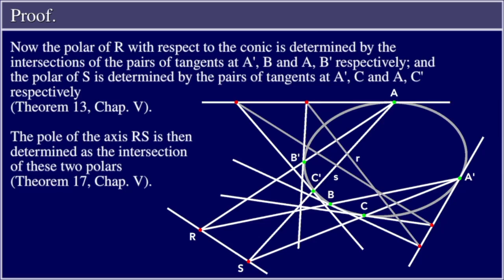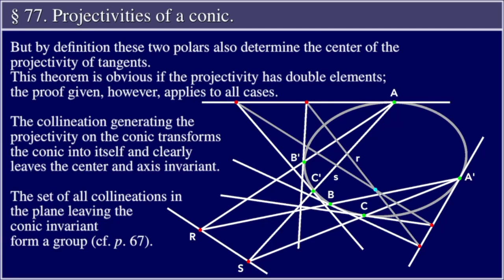By Theorem 13, Chapter 5, the pole of the axis rs is then determined by the intersection of these two polars (Theorem 17, Chapter 5). But by definition, these two polars also determine the center of the projectivity of tangents. This theorem is obvious if the projectivity has double elements; the proof given, however, applies to all cases. The collineation generating the projectivity on the conic transforms the conic into itself and clearly leaves the center and axis invariant.